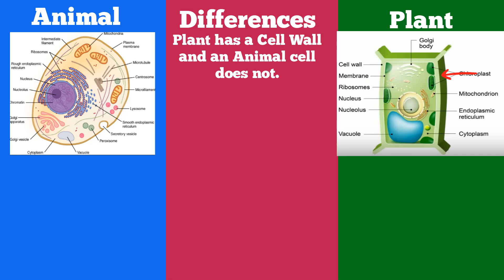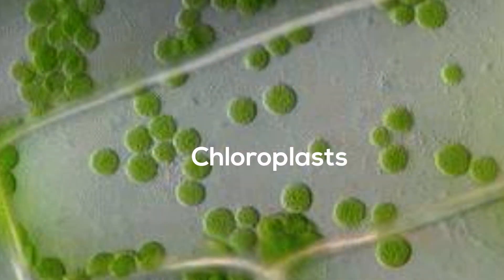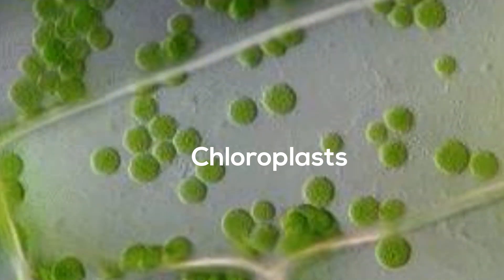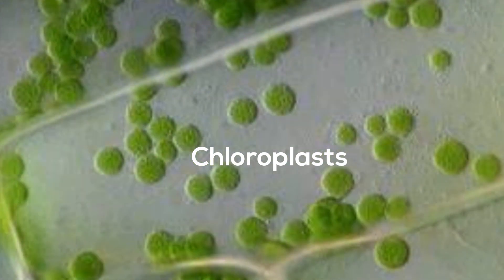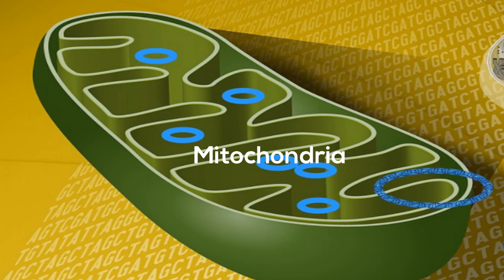A plant cell has chloroplasts. Chloroplasts are the location of photosynthesis, which allows the plant to convert sunlight into sugar. Then the mitochondria of the plant uses this sugar to create energy.